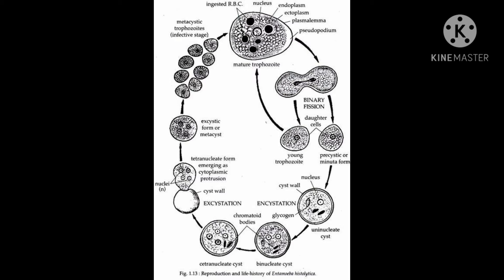There will be the formation of a tetranucleated cyst. The tetranucleate cyst undergoes mitotic division — each one undergoes one mitotic division — leading to the formation of eight amoebulae. Those eight amoebulae then convert to the trophozoite stage of Entamoeba histolytica.